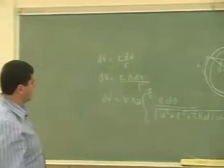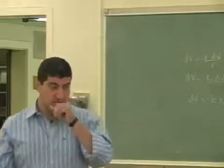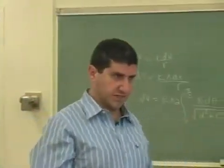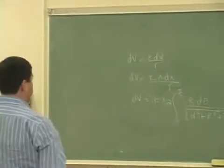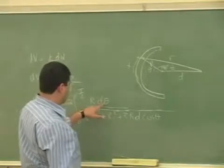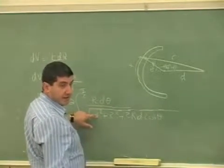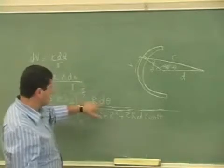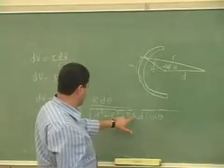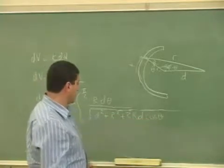Doing a general indefinite integral is pretty tough — there's going to be no easy way of integrating that. But d squared is a constant, so we don't have to integrate the d squared. What's changing here is the theta. So r squared is a constant and rd is constant, so the only thing that we're really integrating is the cosine theta.